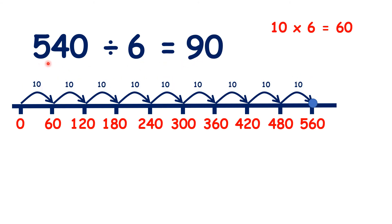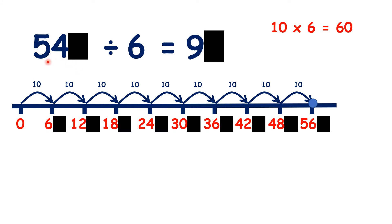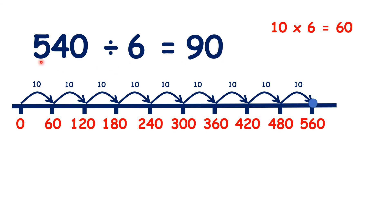But we don't really need to use a number line, because if we know that 54 divided by 6 is 9, we know that 540 divided by 6 is 90. So that's right.